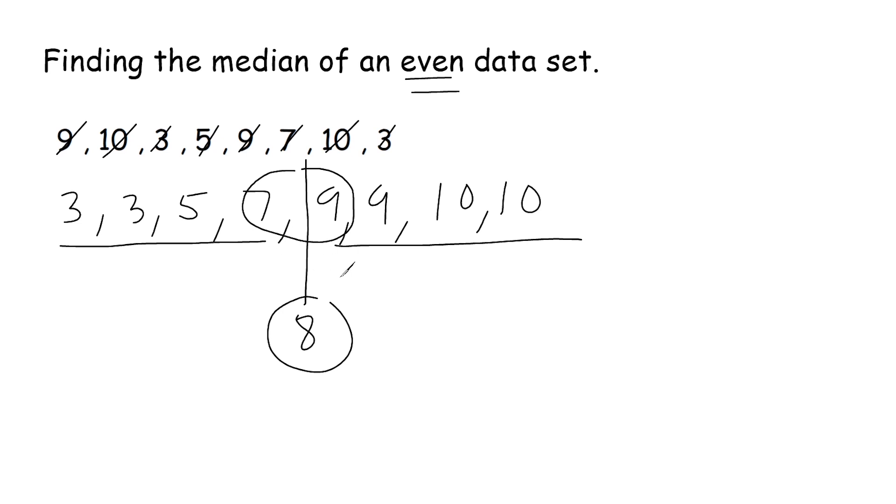Now seven and nine is an easy example because we can just look at seven and nine and know that eight is in the middle of those two numbers. But let's say you have two numbers where you can't just look at those numbers and figure out what is in the middle.